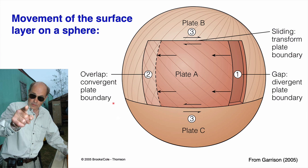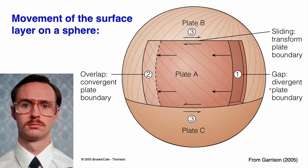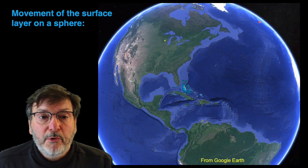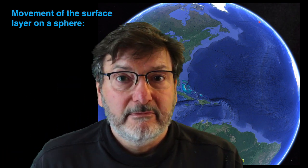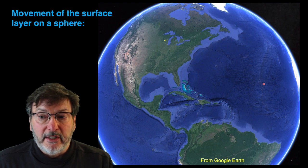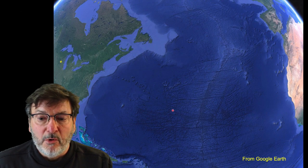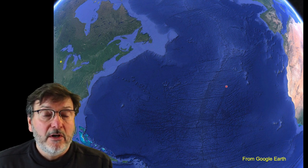Where plates come together we get a convergent plate boundary. Where they're spreading and space is being created, that's a divergent plate boundary — and that's the mid-ocean ridges. We can have divergence on the continents too, as we saw with the East African Rift System. Movement of a solid surface on a sphere is complex, and you see that complexity with horizontal faults cutting the mid-ocean ridge in the Atlantic, and in some places offsetting the ridge.